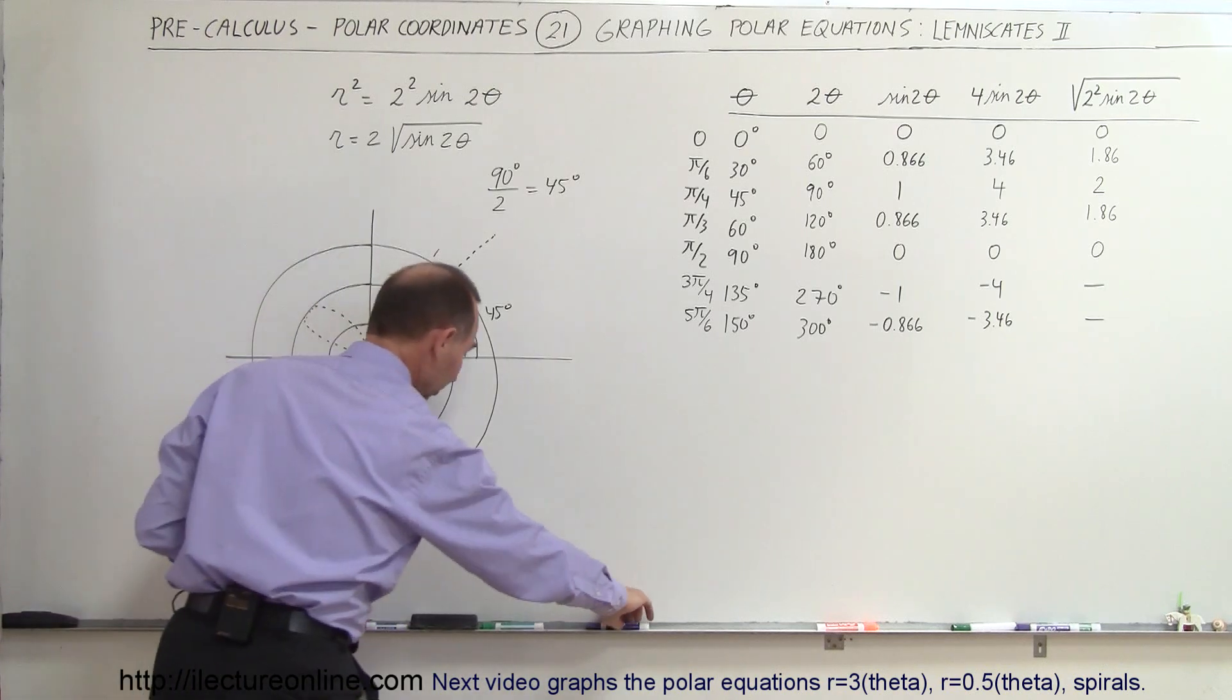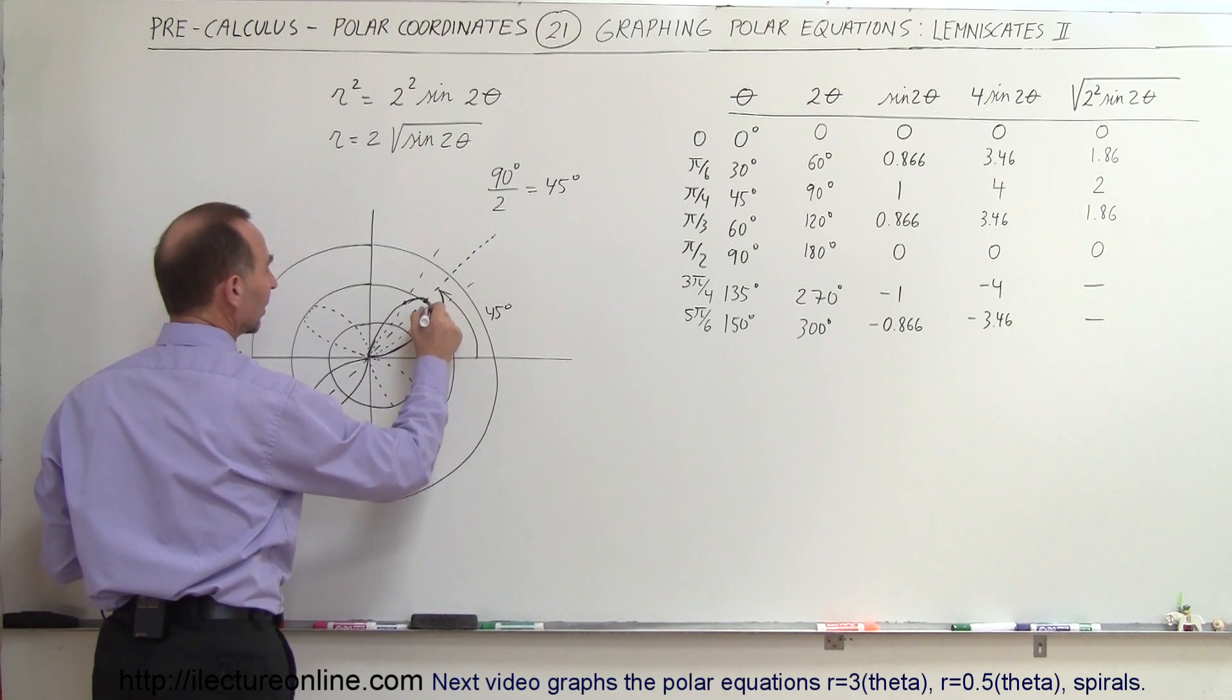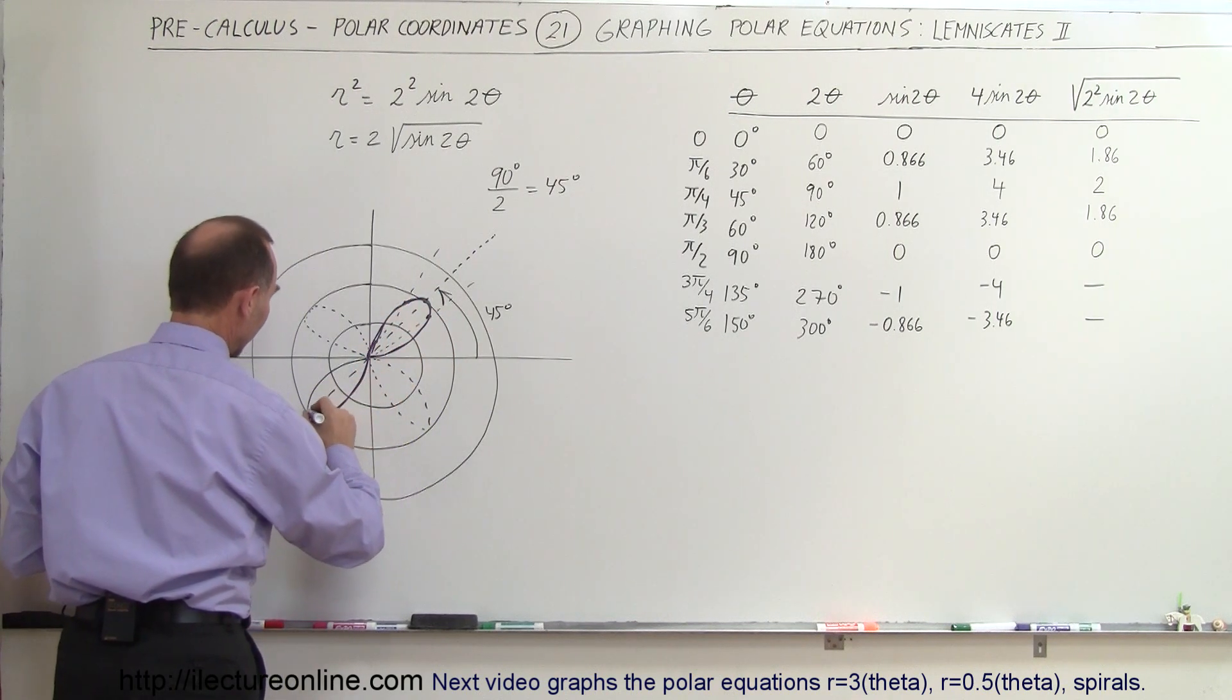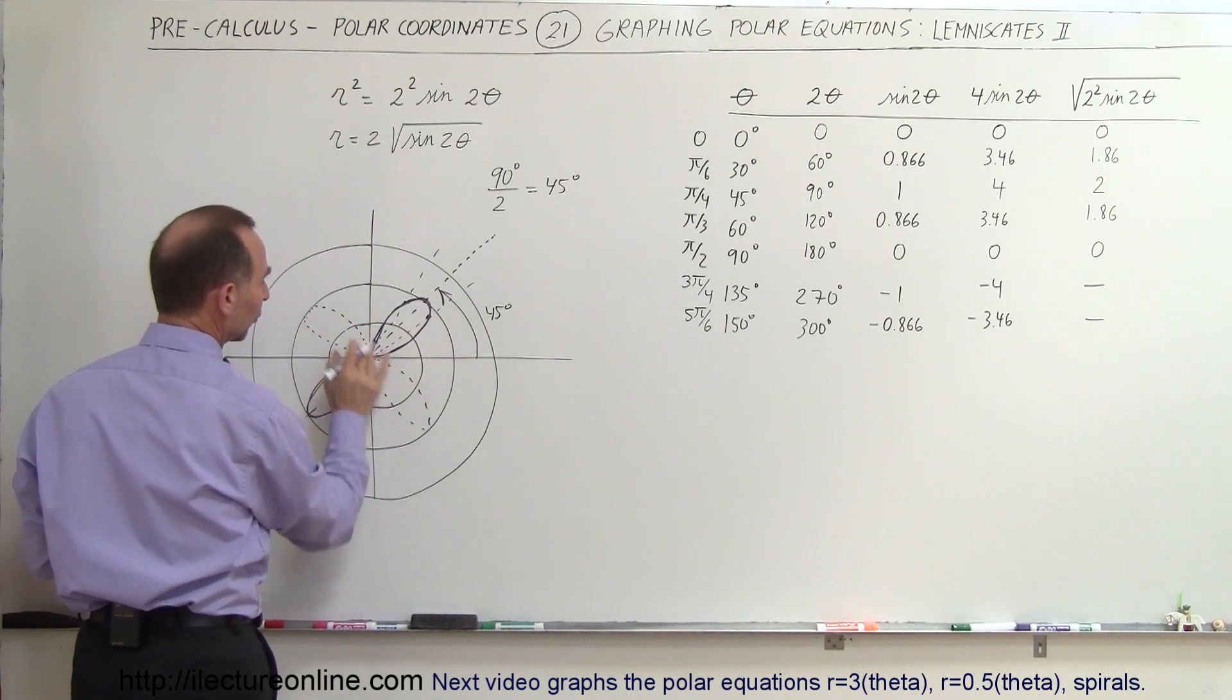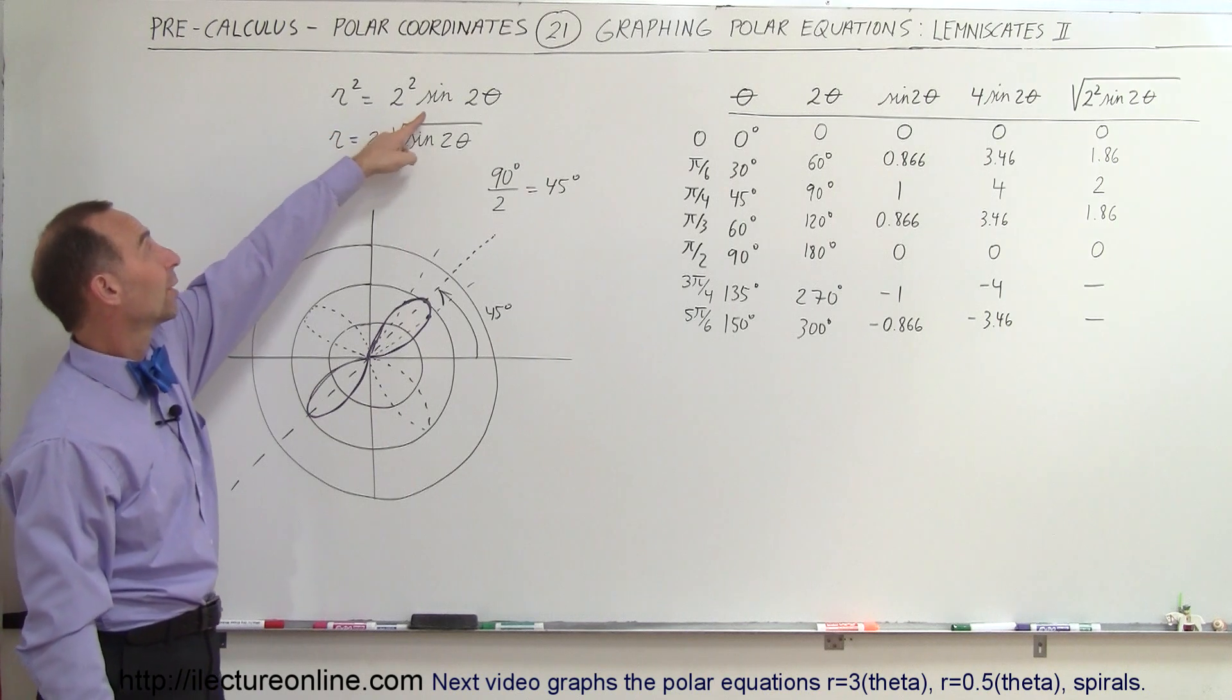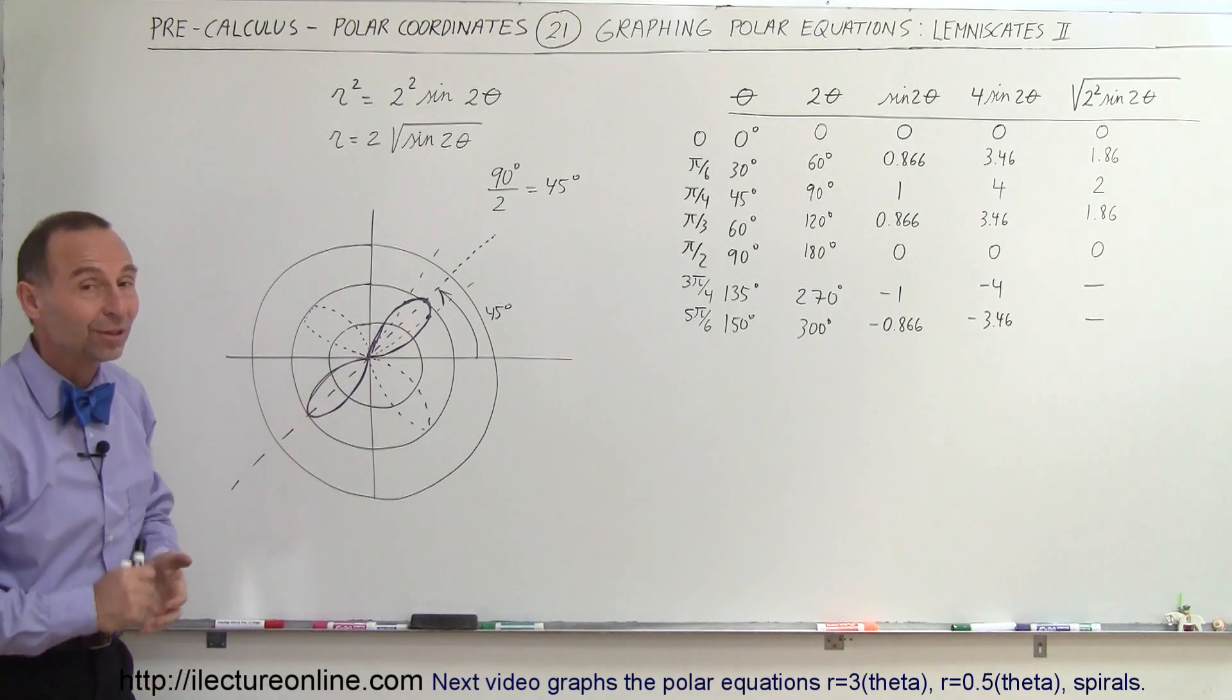So ultimately, and let me use a different color to accentuate, you can see that the lemniscate is going to look like this on the one side and like this on the other side. Of course those two don't count, and that is the lemniscate for the equation r squared equals 2 squared times the sine of 2 theta, or take the square root of both sides, and that's what the graph looks like.